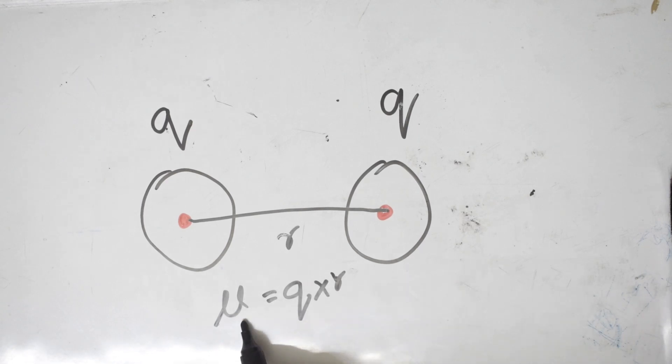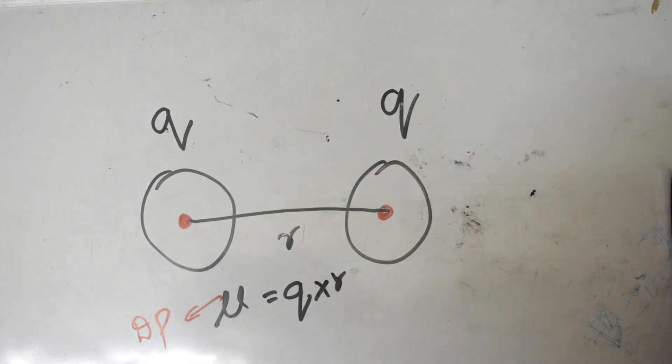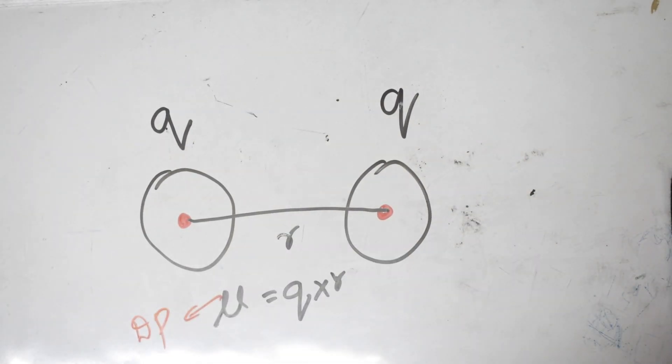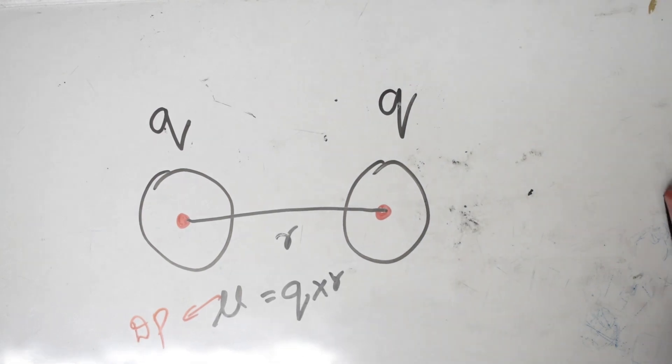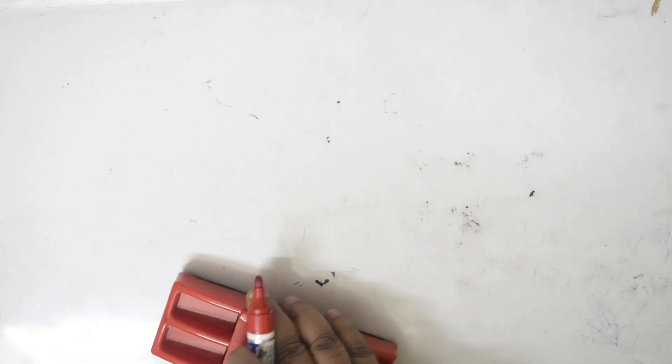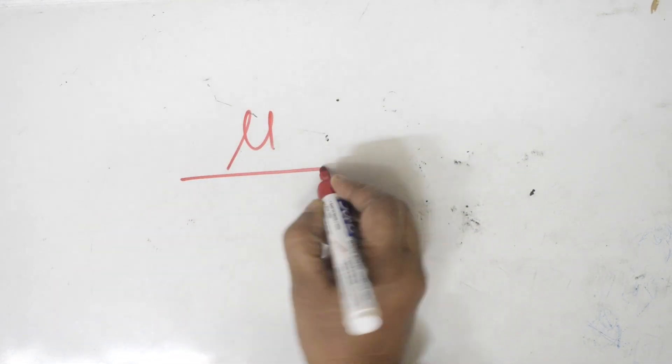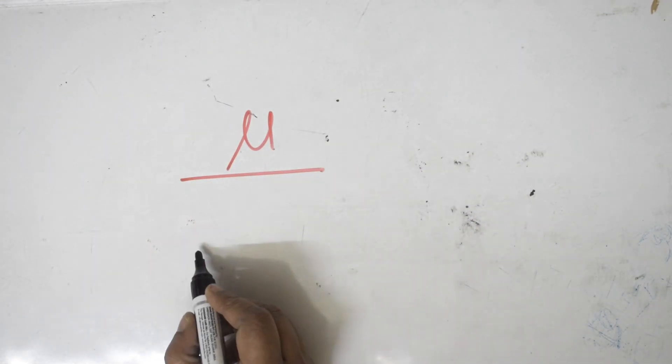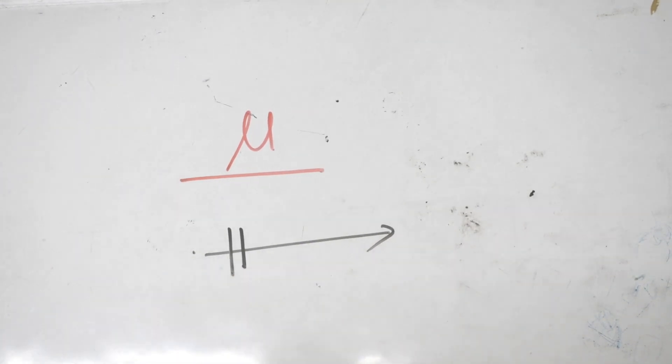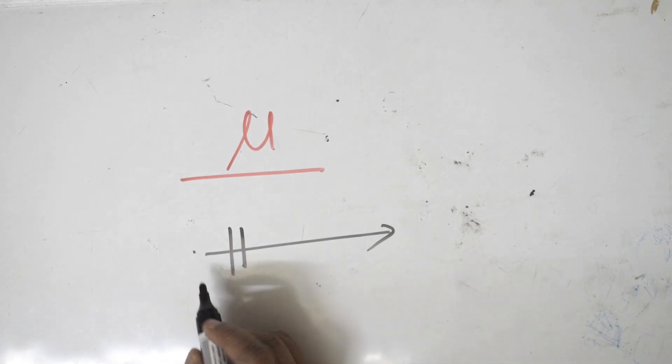This is mu, where mu is nothing but your dipole moment, q times r. Now this dipole moment mu, which is equal to q r, where am I going to use it? What actually is it useful in NEET examination?